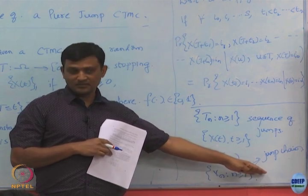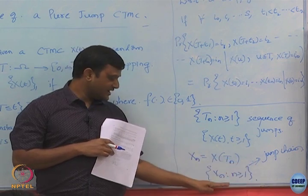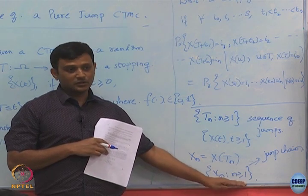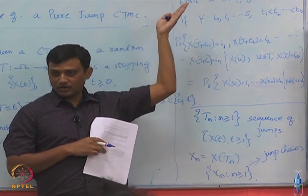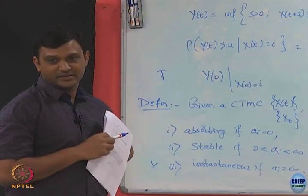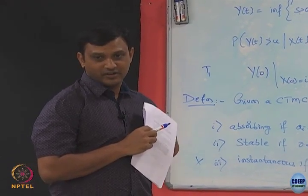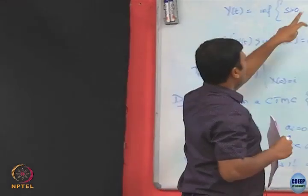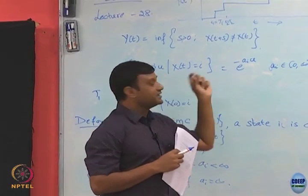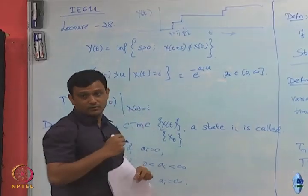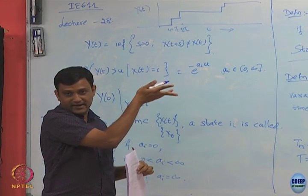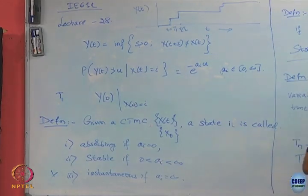Whether this jump chain is a DTMC, we will verify. We have a discretely-indexed chain Xn defined on the same state space S as the original CTMC. The convention is that if the CTMC is right-continuous, Xn captures the new state immediately after each jump; otherwise it takes whatever value is defined. We call this sequence Xn the jump chain.